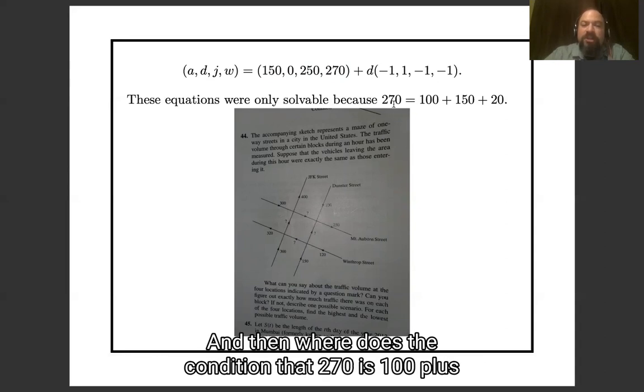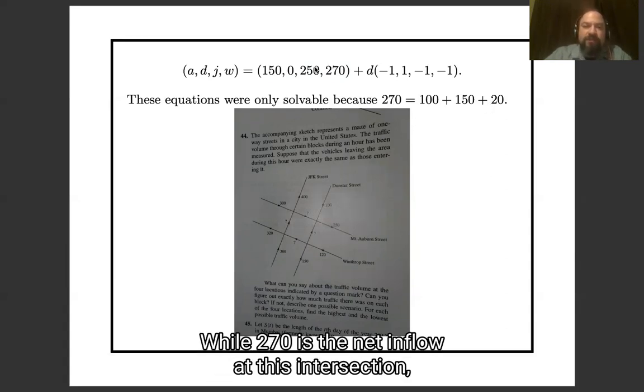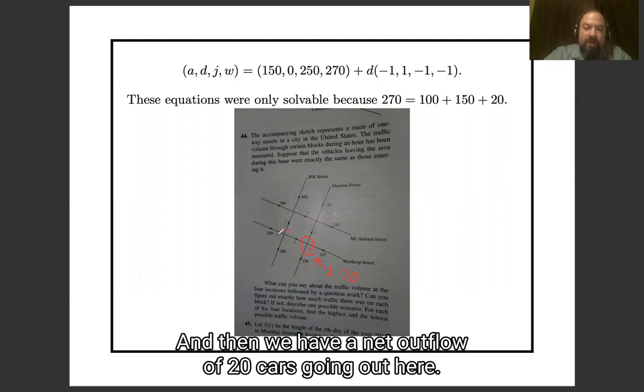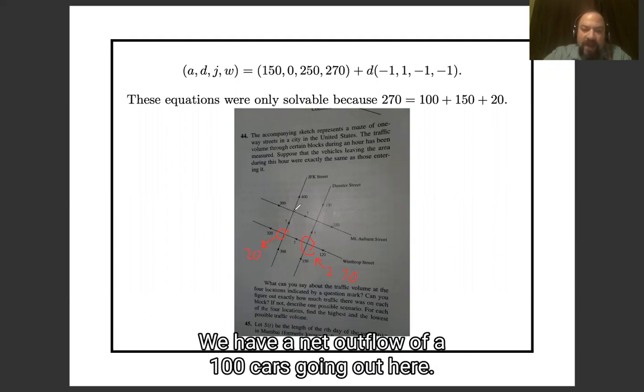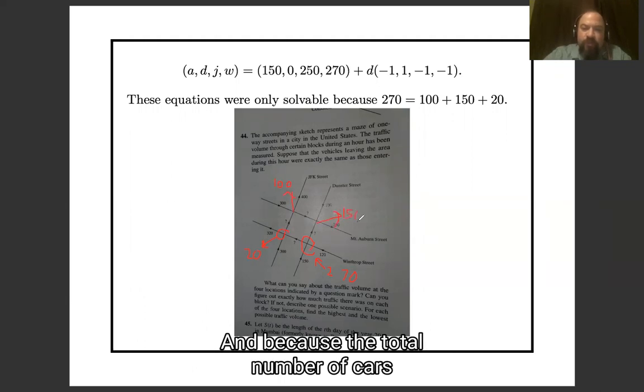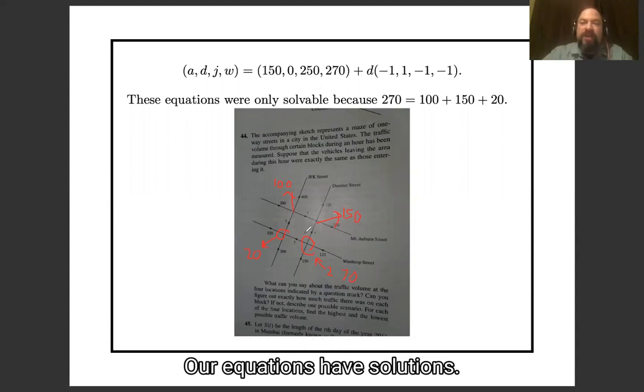And then where does the condition that 270 is 100 plus 150 plus 20 come from? Well 270 is the net inflow at this intersection. There are 270 cars coming in here. And then we have a net outflow of 20 cars going out here. We have a net outflow of 100 cars going out here. And we have a net outflow of 150 cars going out here. And because the total number of cars going in equals the total number of cars going out, our equations have solutions.